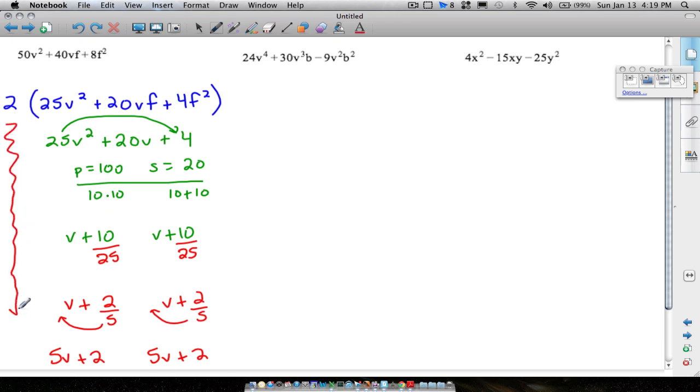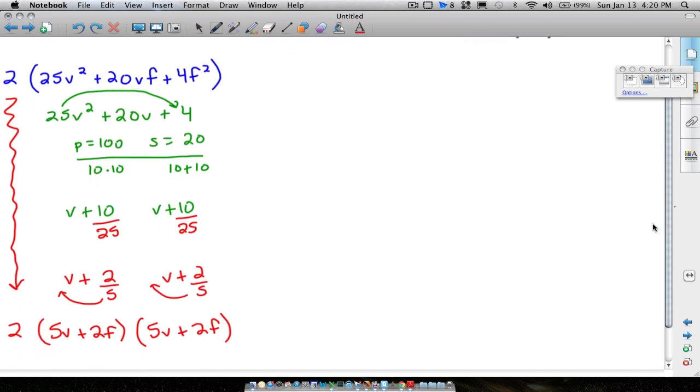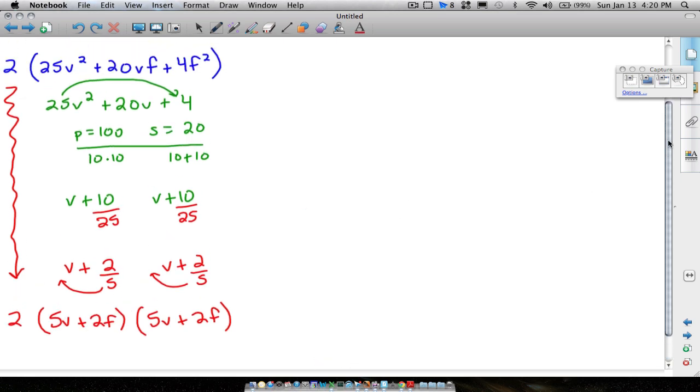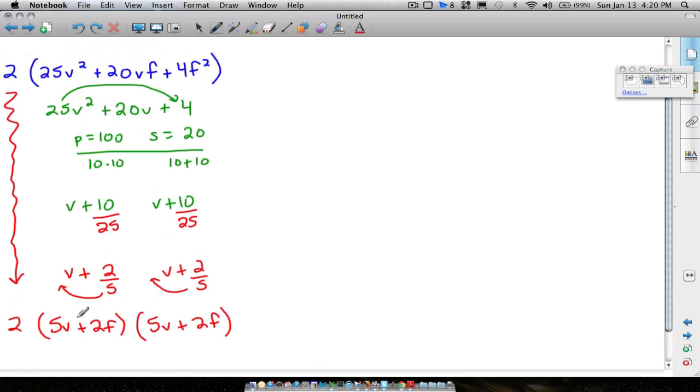And then we do bottoms up on this. So therefore, we have 5v plus 2, 5v plus 2. Now, let's not forget the GCF we pulled out from the beginning. Now what we have here is still not the final answer. The reason why is because I was trying to get you to see this trinomial without having an f in it. But we have to bring that f back. Notice this last term is 4f squared. How could we get 4f squared down here by multiplying these last two terms? If we just stuck an f right here and an f right here. 2f times 2f is 4f squared.